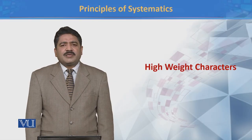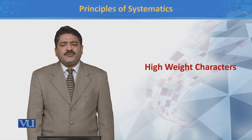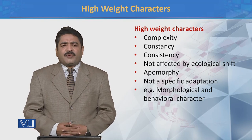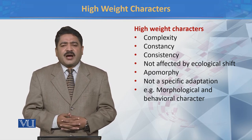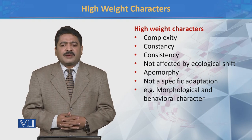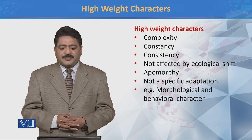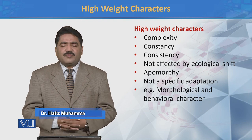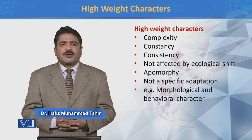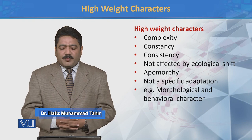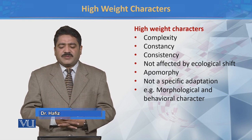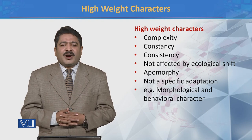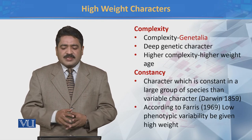In this module we will discuss high weight characters. There is a list of characters which can be considered as high weight characters — for example, complexity, consistency, characters which are not affected by ecological shift, apomorphic, and not a specific adaptation. Now we will discuss one by one, starting with complexity.